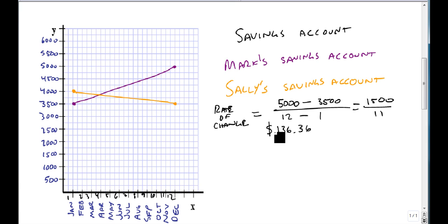Sally, on the other hand, she starts strong, but she doesn't end as well. She starts with $4,000, but she only ends with $3,500. So we put that first and we subtract $4,000 from it.